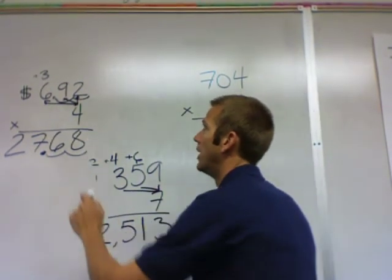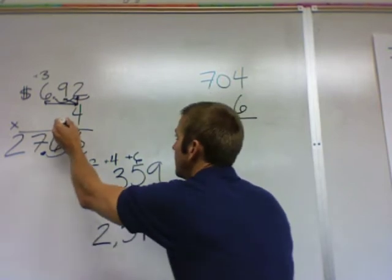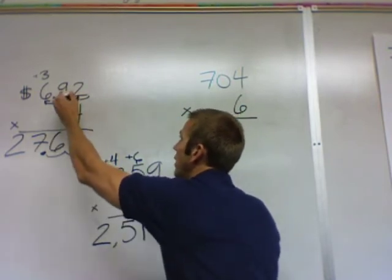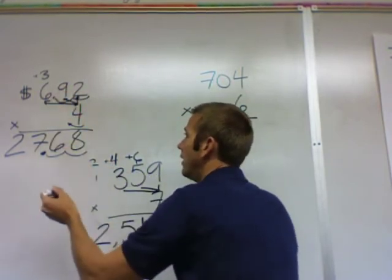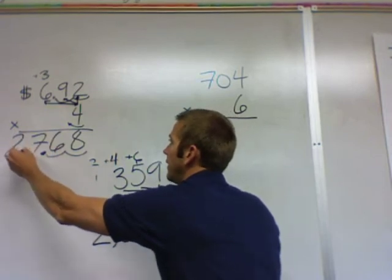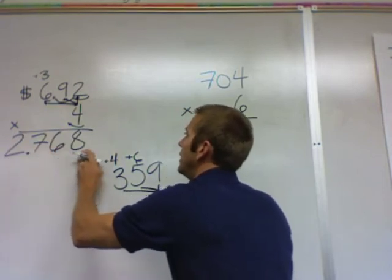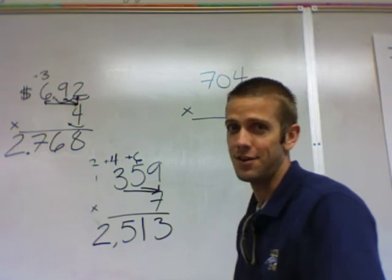If it was 6.92 times .4, then you have 1, 2, 3 spots. This would be 2.768 dollars.